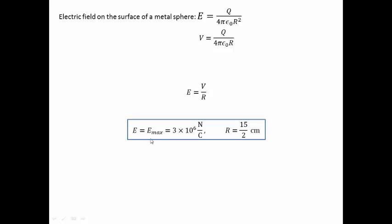As mentioned, the electric field must be equal to the maximum electric field, which is the breakdown electric field. By substituting these two values into this equation, you'll find that the potential of the metal sphere must be equal to 2.3 × 10^5 V.